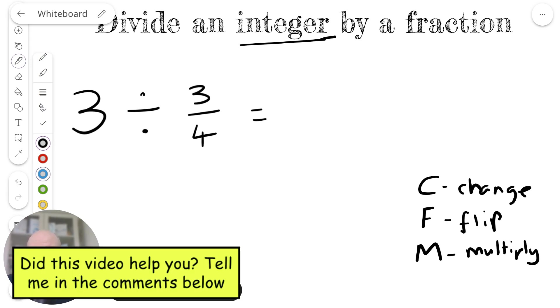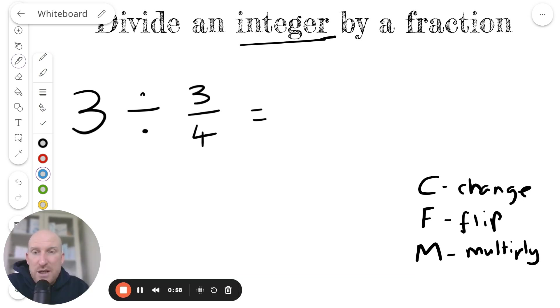Let me show you how we use the CFM system to make calculations like this. The first thing we're going to do is change the integer into an improper fraction. So 3 whole ones as an improper fraction is going to be 3 over 1. Watch the next example as well, which will help you understand exactly what that means if you're confused by that.